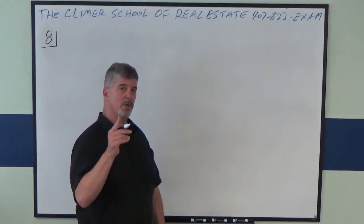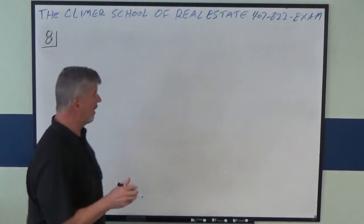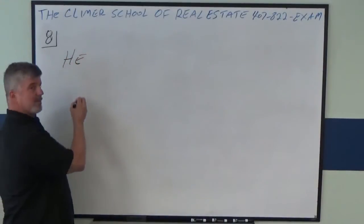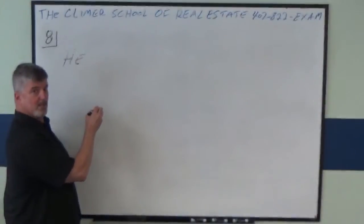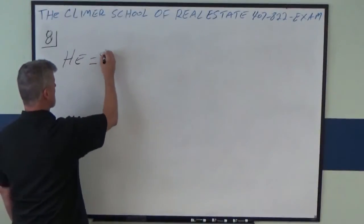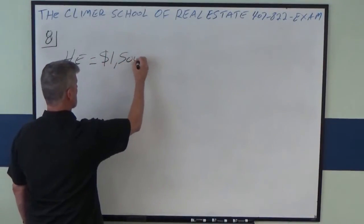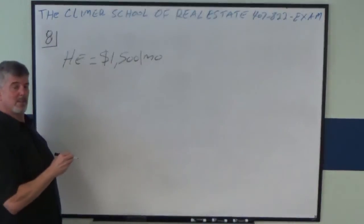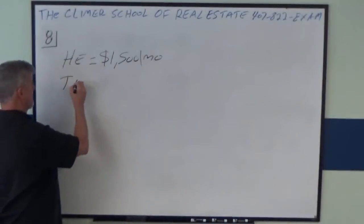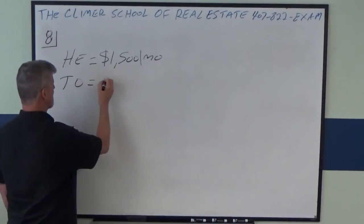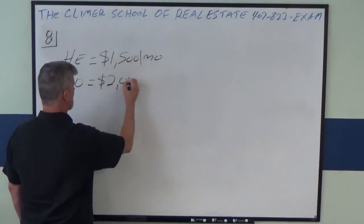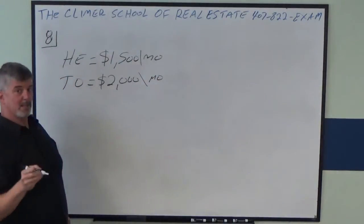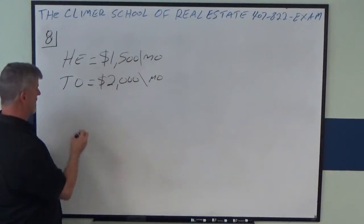So let's take a look here. What do we know? Housing expense is $1,500 a month. Total obligations is $2,000 a month. The total monthly income is $5,000 a month.